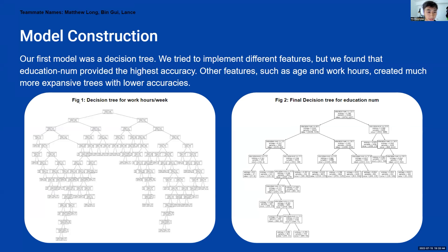Other features such as age and work hours created more expansive trees with lower accuracies. So right here on the left, you can see this is figure one, the decision tree based off of work hours per week. And it created a very large tree that didn't really prove too many branches, which resulted in lower accuracy. And to the right over here, we created a decision tree with education number. And as you can see, it's much more compact and it produced higher accuracy results.